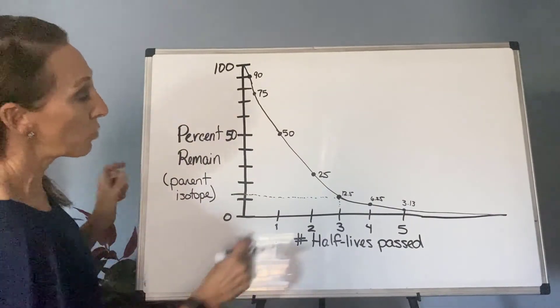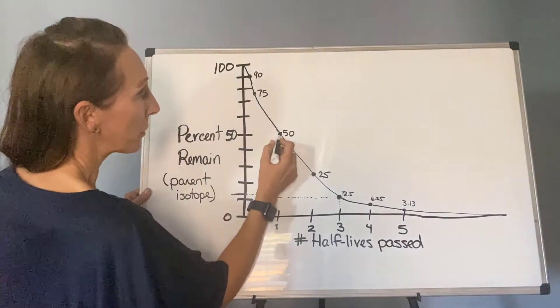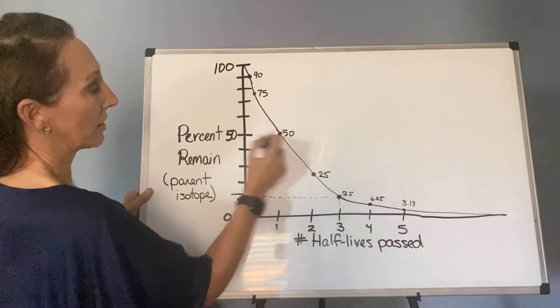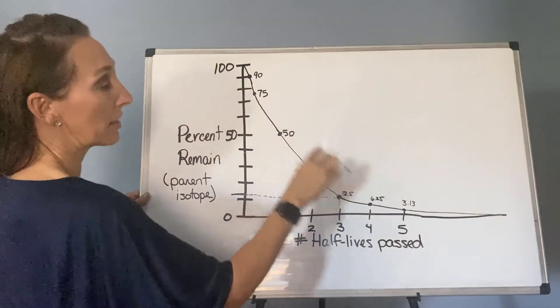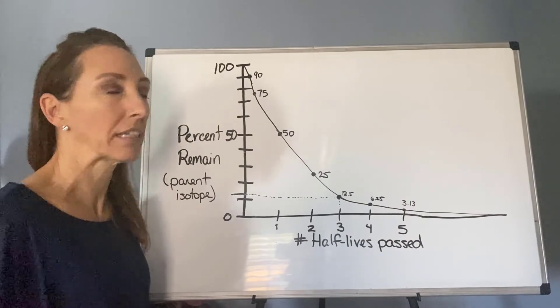And then you could do the same thing. If one half-life has passed, we would go up and over and you would see that it's at 50% remaining. But again, in this version, they're actually labeled, so that makes it pretty easy.